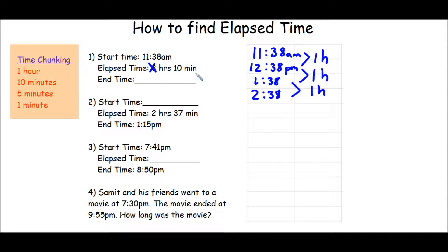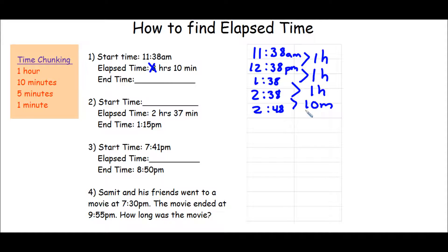Now I need to add 10 minutes. Luckily this is one of our chunks, so we can use the whole thing all at once, and this will give me 2:48. Remind yourself what you've added, and there you have it — our end time is going to be 2:48 PM.